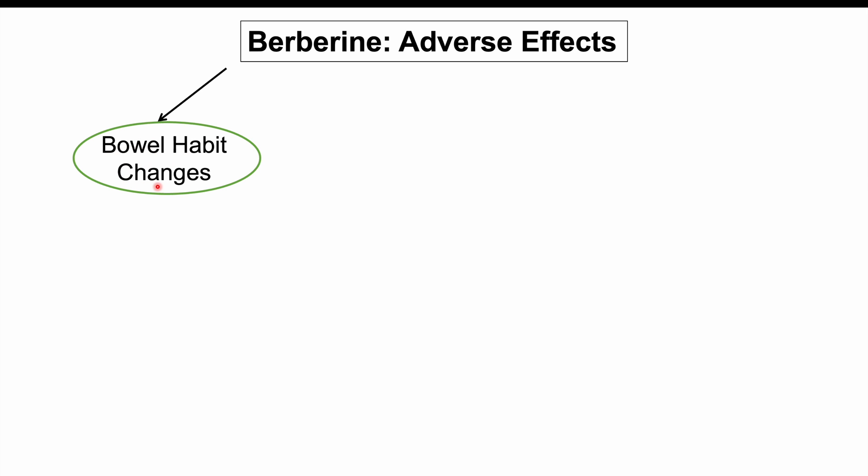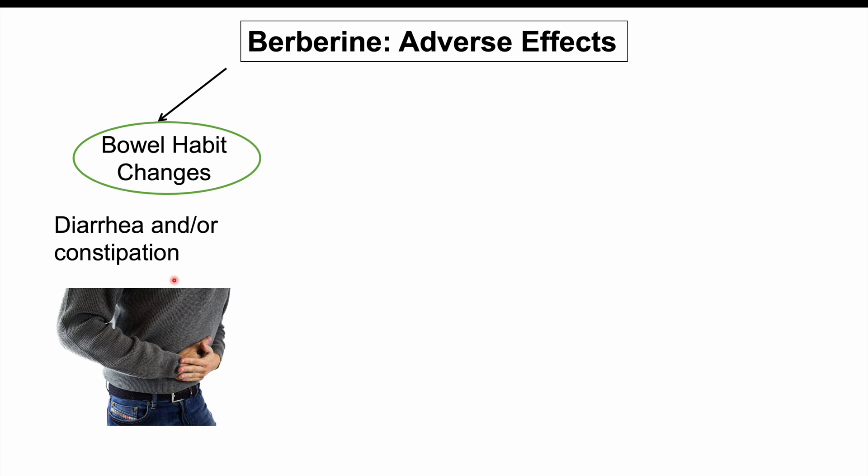Now let's briefly talk about the adverse effects of berberine. Some include bowel habit changes such as diarrhea and/or constipation, due to the inhibition of alpha-glycosidase. When glucose isn't broken down, it can pass into the large intestine in its complete form, drawing water and causing diarrhea. Berberine's effects on the gut microbiota can also lead to bowel habit changes. While berberine has historically been used to treat secretory diarrhea and slows gastric motility, it can itself cause diarrhea as well.